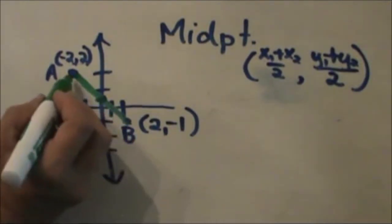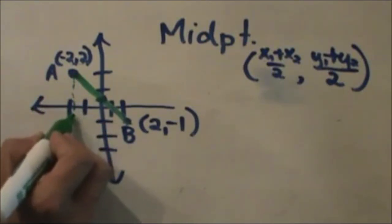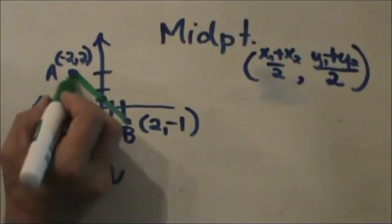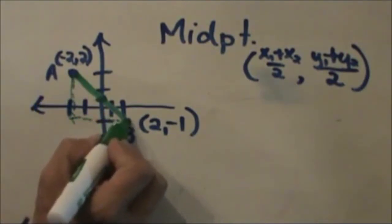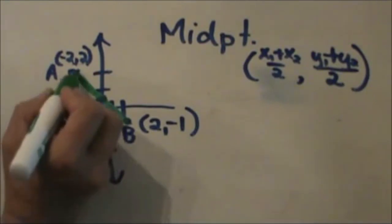I am going to draw a right triangle. So I am going to take point A and dot it down until I get even with point B. Then I am going to go across until I get over to point A. Now I have created a right triangle.